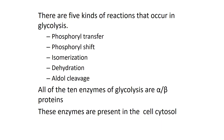Before we get into understanding glycolysis, let me give you an overall picture. There are about ten steps in the conversion of glucose to pyruvate. The first five steps are the preparatory steps — the glucose molecule is being prepared to release lots of energy. The last five steps are the payoff steps, where energy present in the carbon-carbon linkages is transferred into ATP molecules.